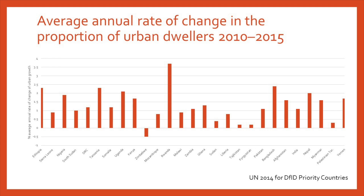Drawing on data from the recent UN Habitat WHO report, the average annual rate of change in the proportion of urban dwellers is increasing across different priority countries. Zimbabwe is bucking the trend, possibly for political reasons, but apart from that there is a very high percentage average annual rate of urban growth across those priority countries.